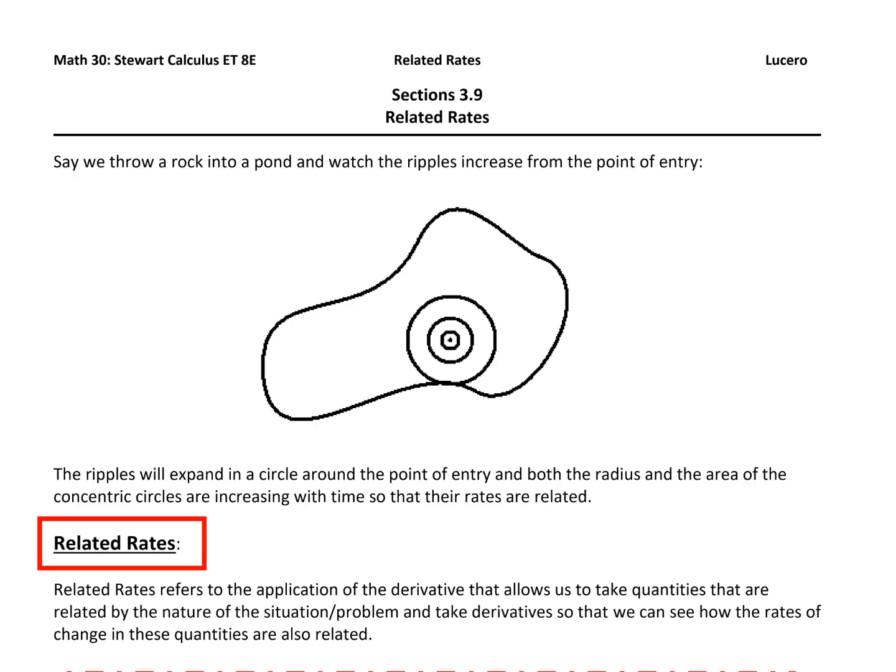For this next section called related rates, let's start by thinking about a scenario. Suppose we throw a rock into a pond and watch the ripples increase from that point of entry. If we assume the ripples are perfectly circular, then as those ripples increase, the radius increases and the area of the circular ripple increases — and those two rates are connected.